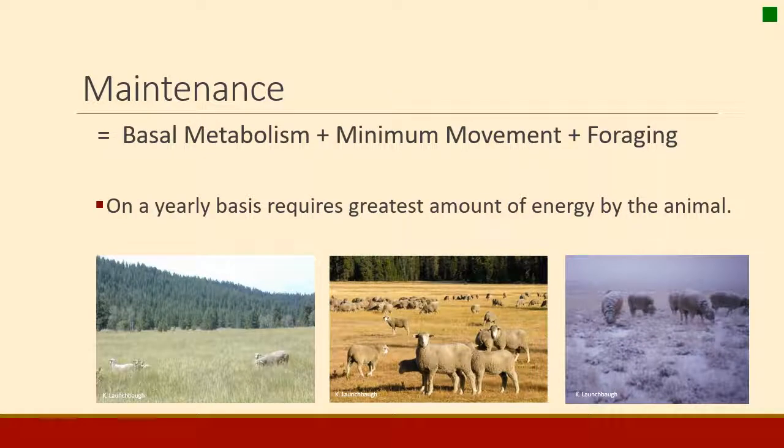Maintenance is that very basic level of energy and nutrients an animal needs to just get up in the morning and survive. It includes basal metabolism — the pumping of blood, breathing, and digestion — just that very basic level of metabolism. Also, a bit of movement: animals can't survive on the range without being able to move around and eat. Those very basic levels of just staying alive on the range would be what we put under maintenance.